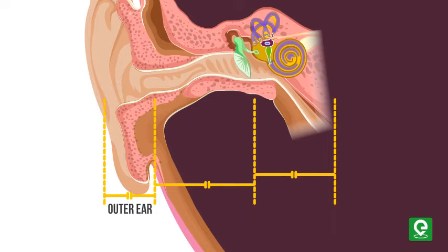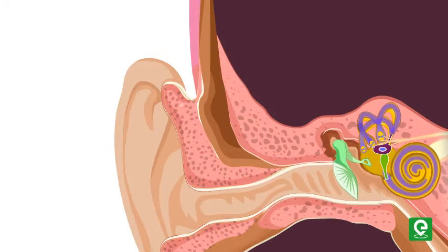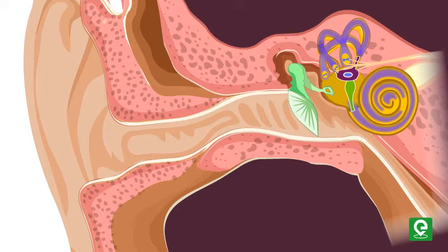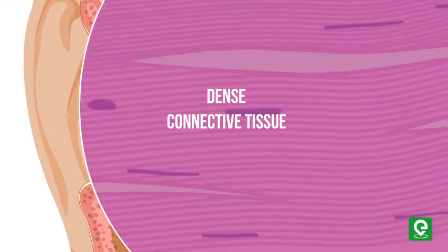The outer ear consists of the pinna and external auditory meatus or canal. The external auditory meatus extends to form a tympanic membrane or eardrum, composed of dense connective tissue.